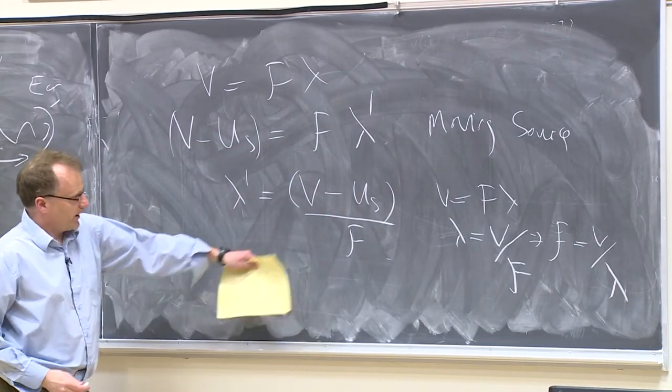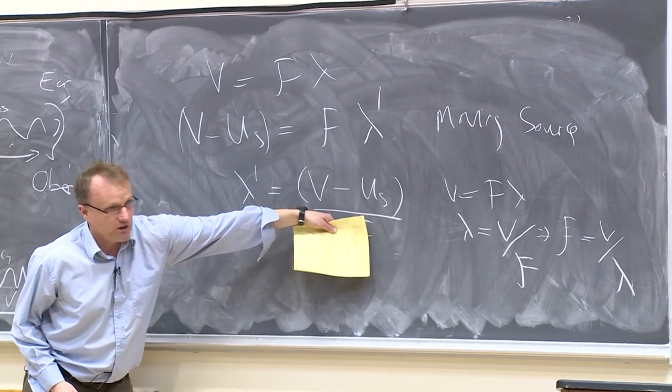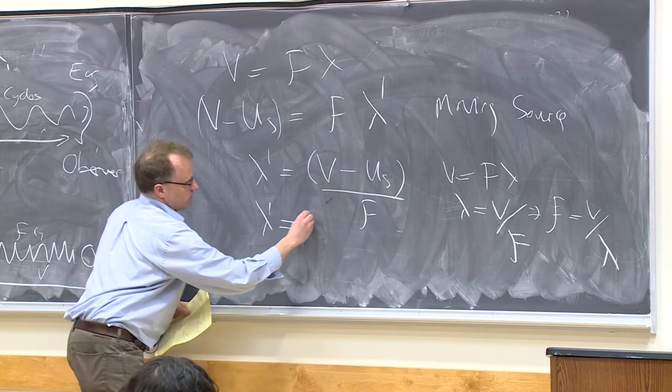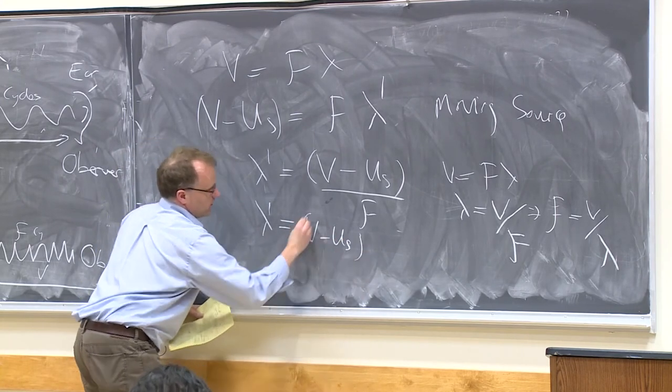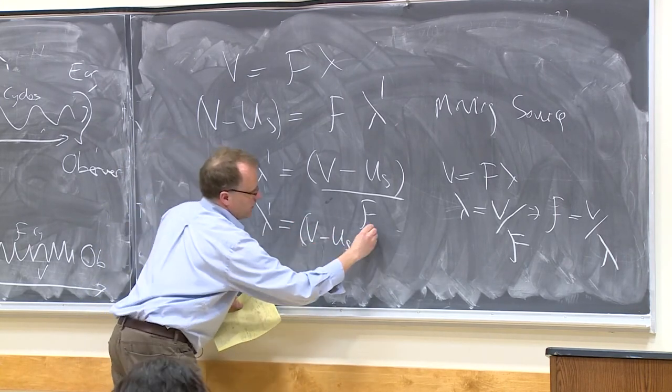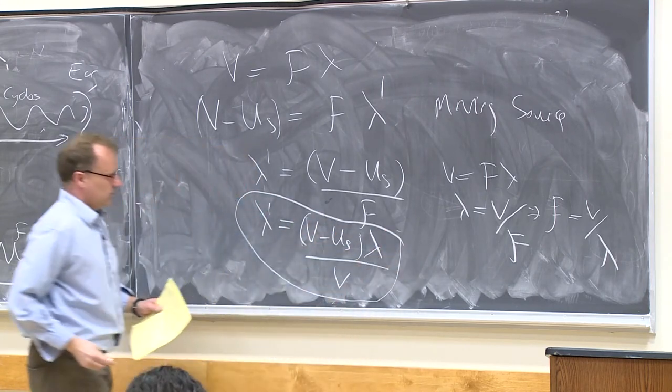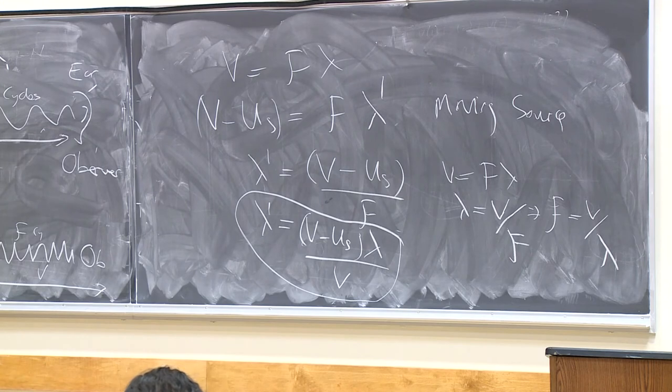So we can replace that f with v over lambda. So we can end up with lambda prime is equal to v minus US multiplied by lambda divided by v. This tells us the change in the wavelength.